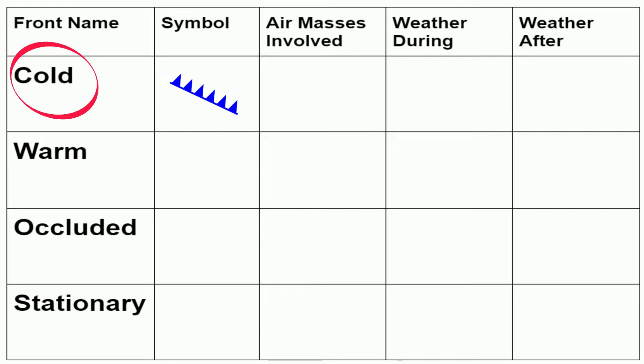The air masses involved are cold air mass meets a warm air mass. The warm air mass is less dense than the cold air mass and rises quickly. The weather along a cold air mass may involve thunderstorms and possibly severe weather. As the front passes you will see colder more dry air and fair to clear skies.